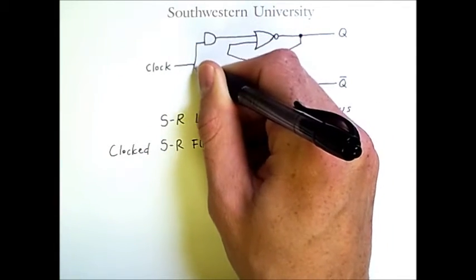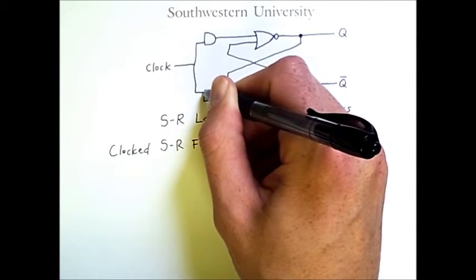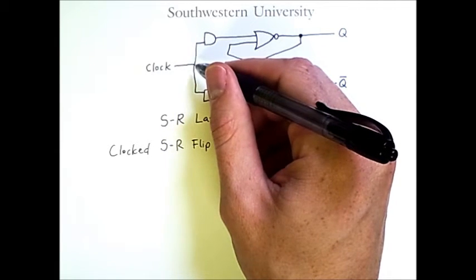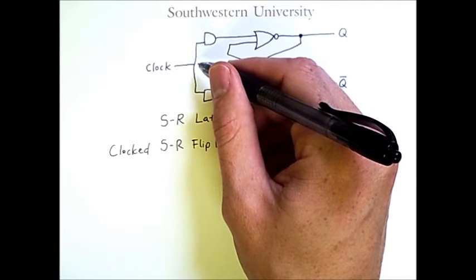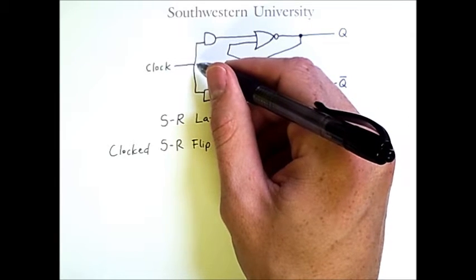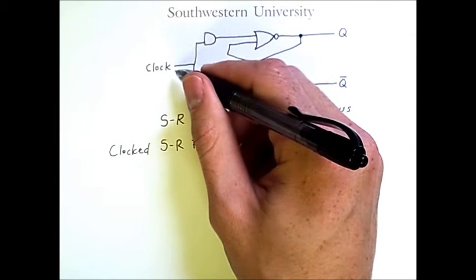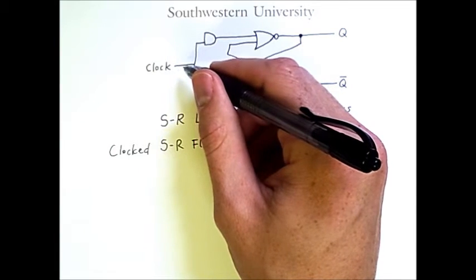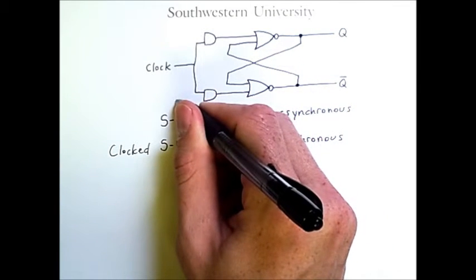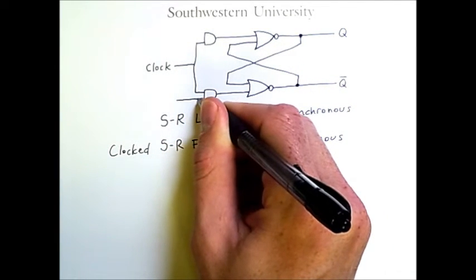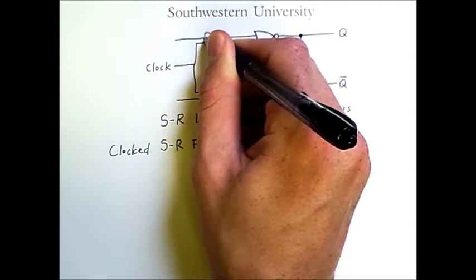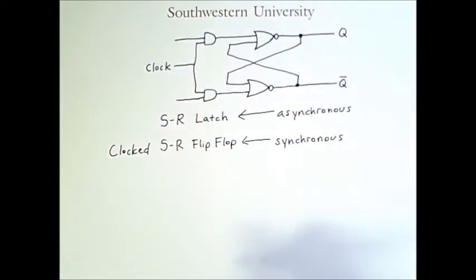So what this clock represents is an input line that is 0 except for at periodic intervals. At periodic intervals, the signal will go from 0 to 1, and the clock assures that that happens regularly. And because different circuits in the system are using the same clock, they will all receive that signal of 1 from the clock at the same time.